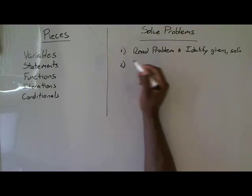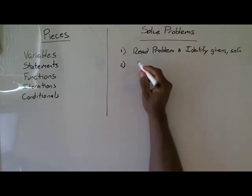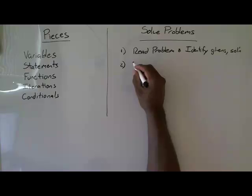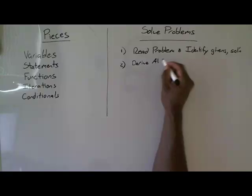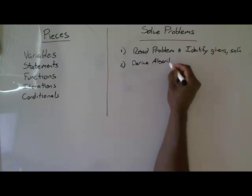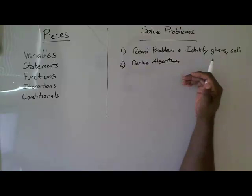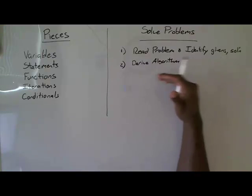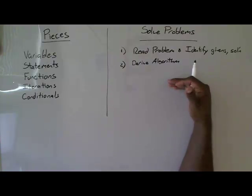Step two would be to come up with a solution or an algorithm. So derive an algorithm. An algorithm is nothing more than a way to solve a problem. Think through how are you going to solve the problem. Do some test cases to see if your algorithm works.